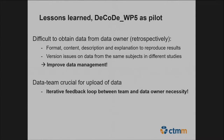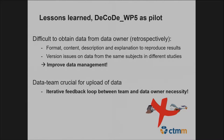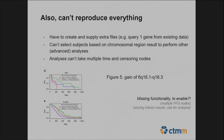We now know where the caveats are, so we can improve data management — it's a work in progress. The data team is really crucial for the upload, and there should be an iterative feedback loop between the data team and the data owners. It is not dumping your data and running away hoping it gets modeled — it is really a team effort. In Transmart, while you can reproduce some things, you can't reproduce everything; you have to create and supply extra files to query for a specific gene.